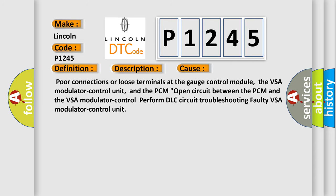Poor connections or loose terminals at the gauge control module, the VSA modulator control unit, and the PCM. Open circuit between the PCM and the VSA modulator control unit. Perform DLC circuit troubleshooting. Faulty VSA modulator control unit.